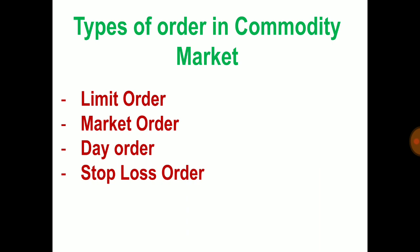The first order is the limit order. A limit order means that the trade should be executed at a specific price or a better price. If you buy a contract then you will always aim for a lower price, and if you sell it then you will always aim for a higher price.